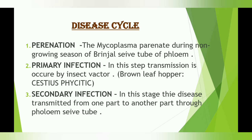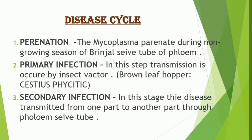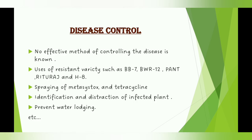Disease cycle — it occurs in three steps. First is perennation: the mycoplasma perennates during the non-growing season of brinjal in the sieve tubes of the phloem. Second is primary infection: transmission occurs by the insect vector brown leafhopper, Cestius phycitec. Third is secondary infection: in this stage the disease is transmitted from one part to another through the phloem sieve tubes.